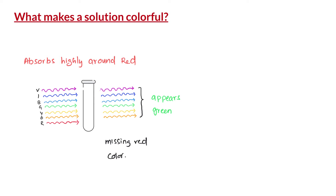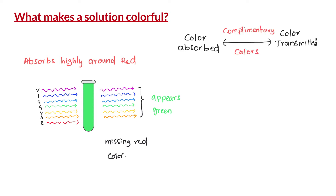As a result, the solution appears to be green in color. The color that is absorbed and the color that is transmitted are said to be complementary colors to each other. In this case, red and green are complementary. If a solution absorbs red color, it appears green, and vice versa.